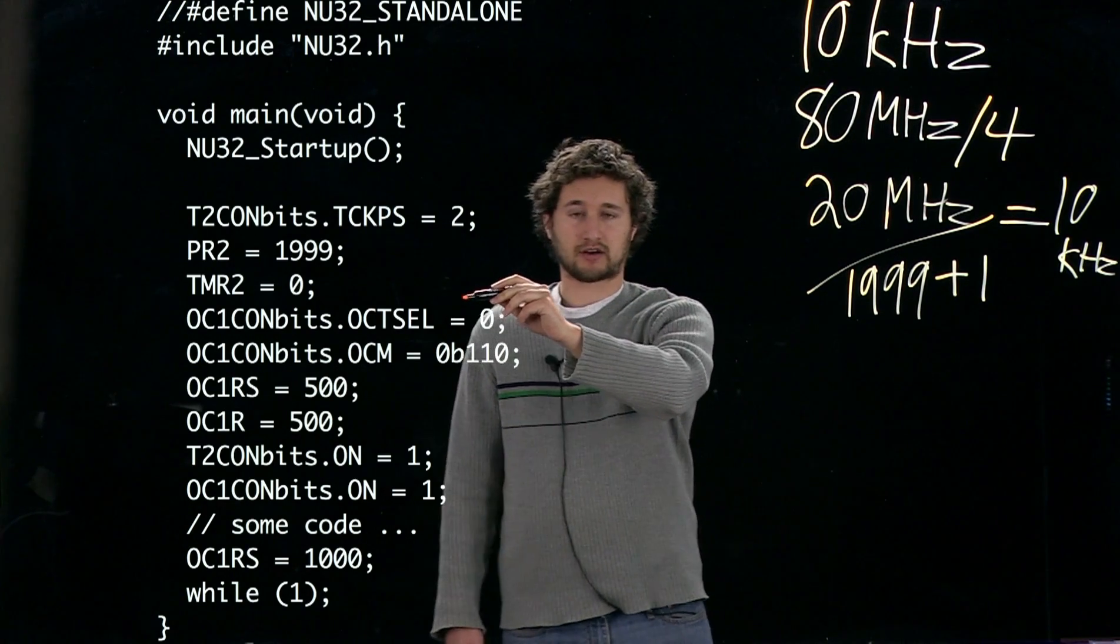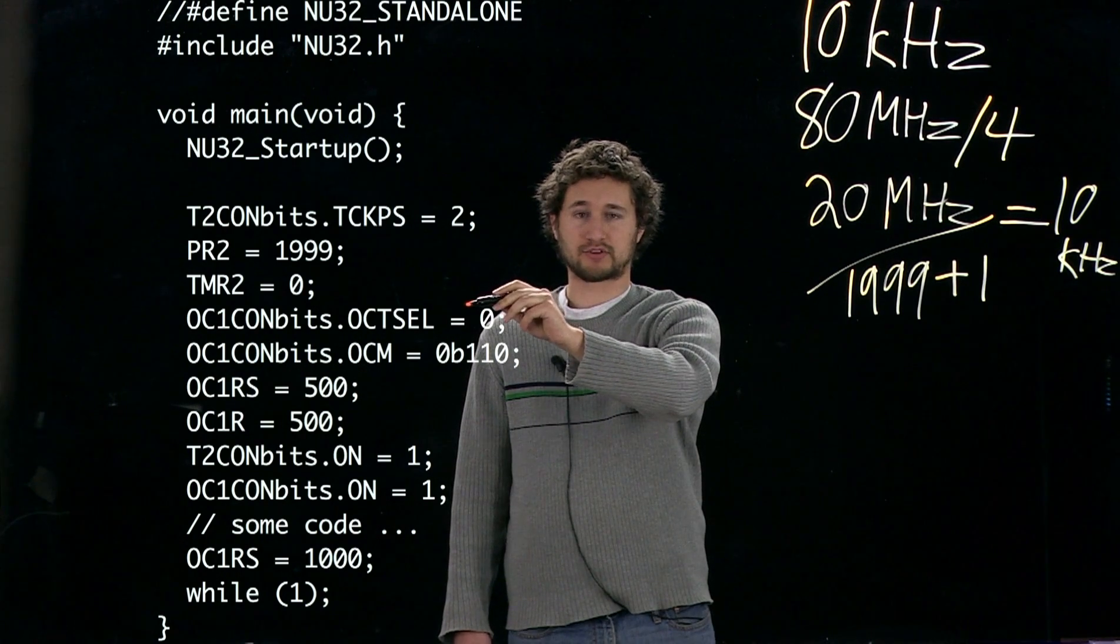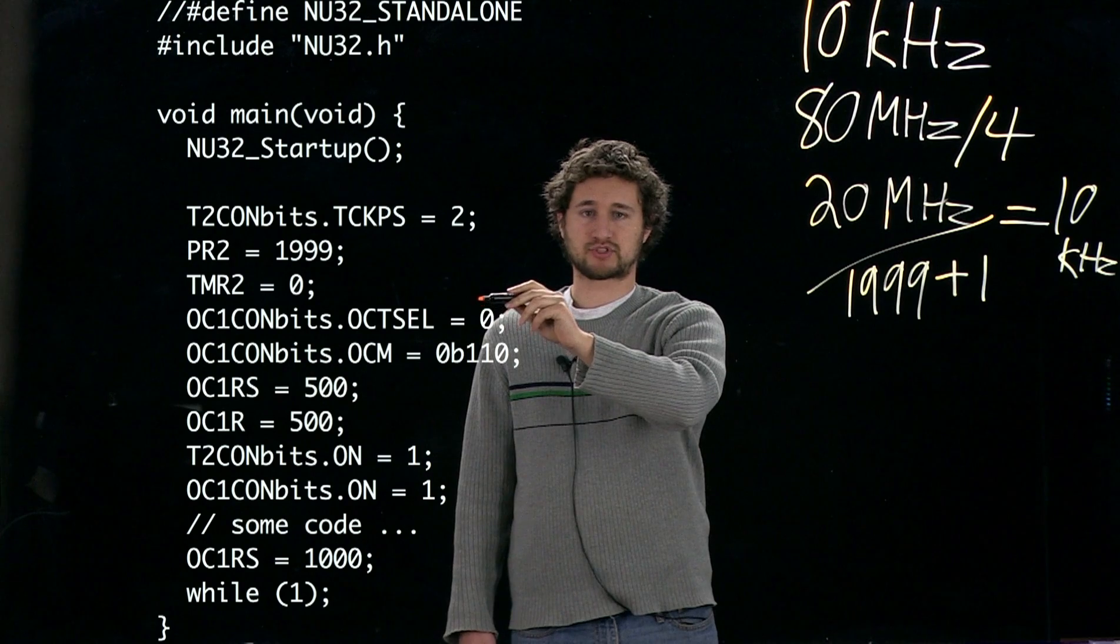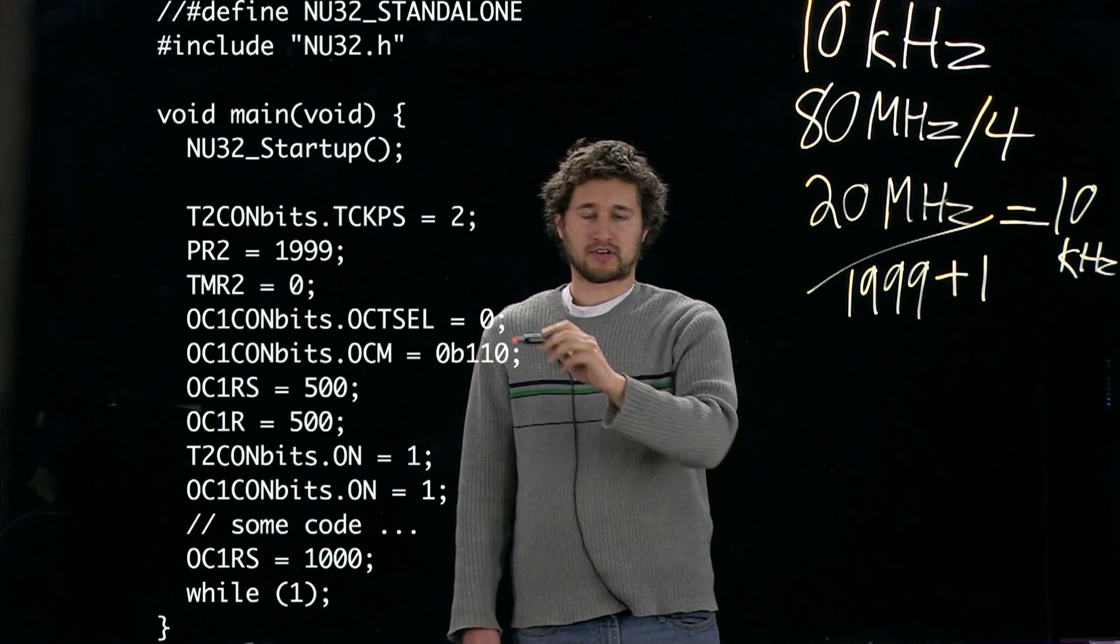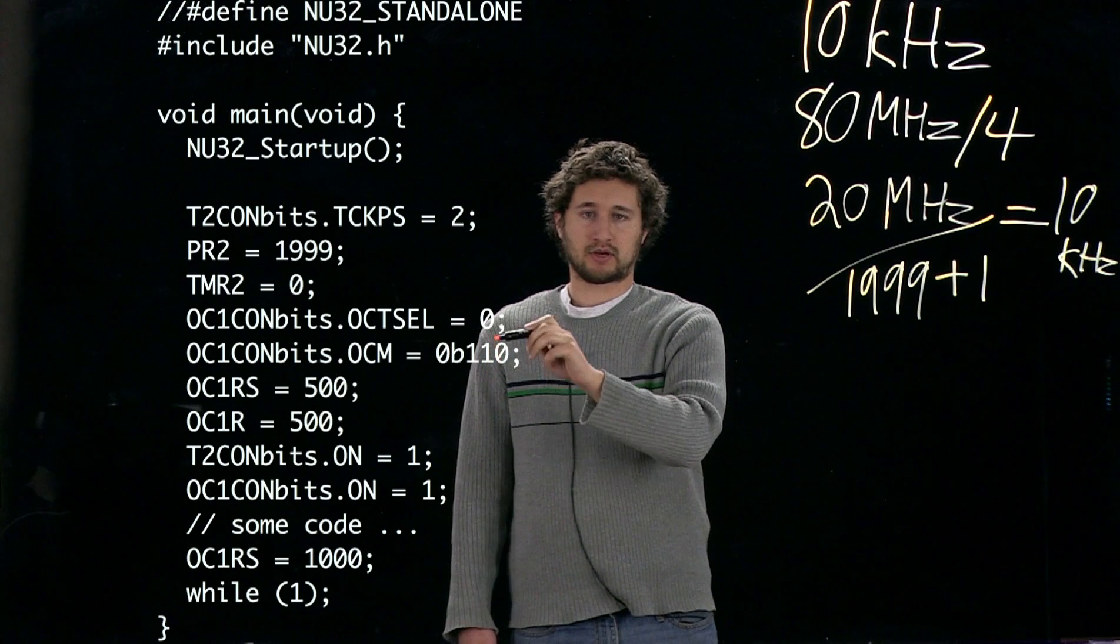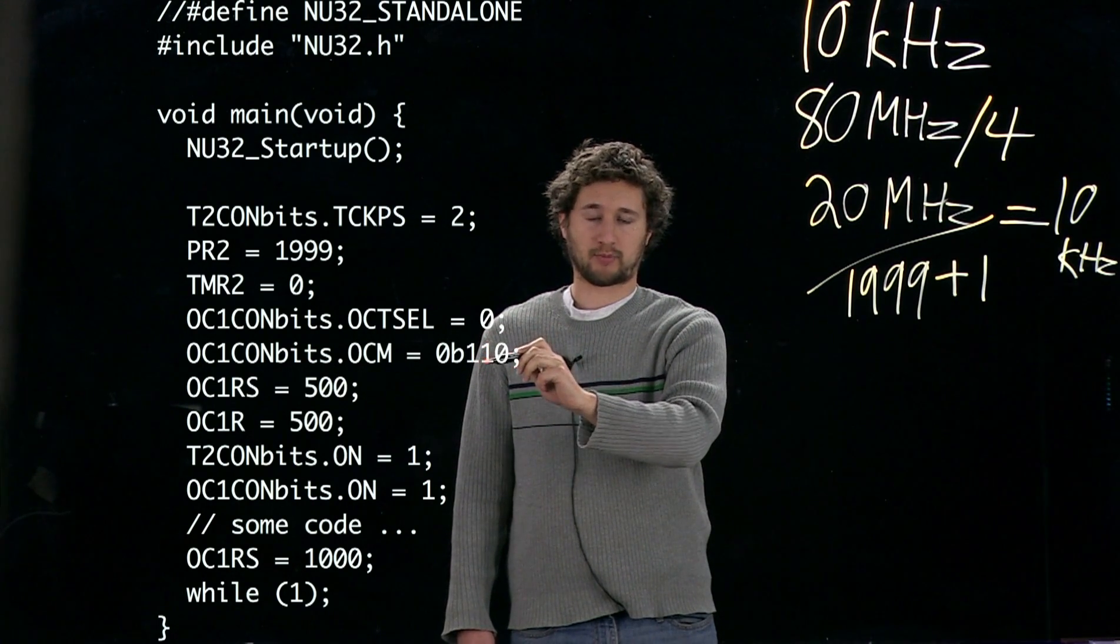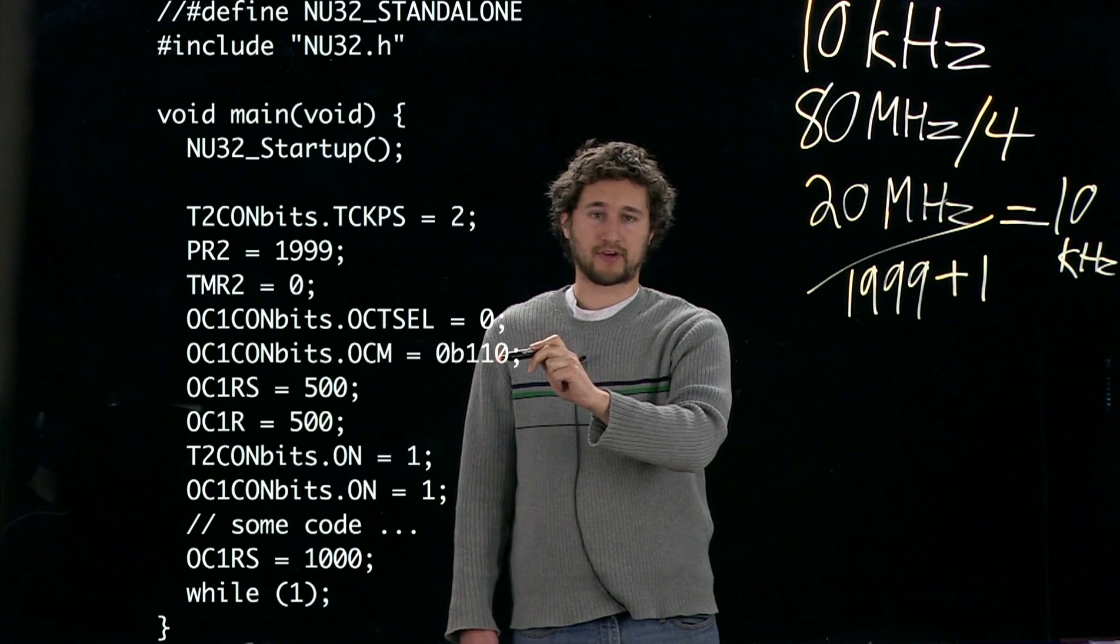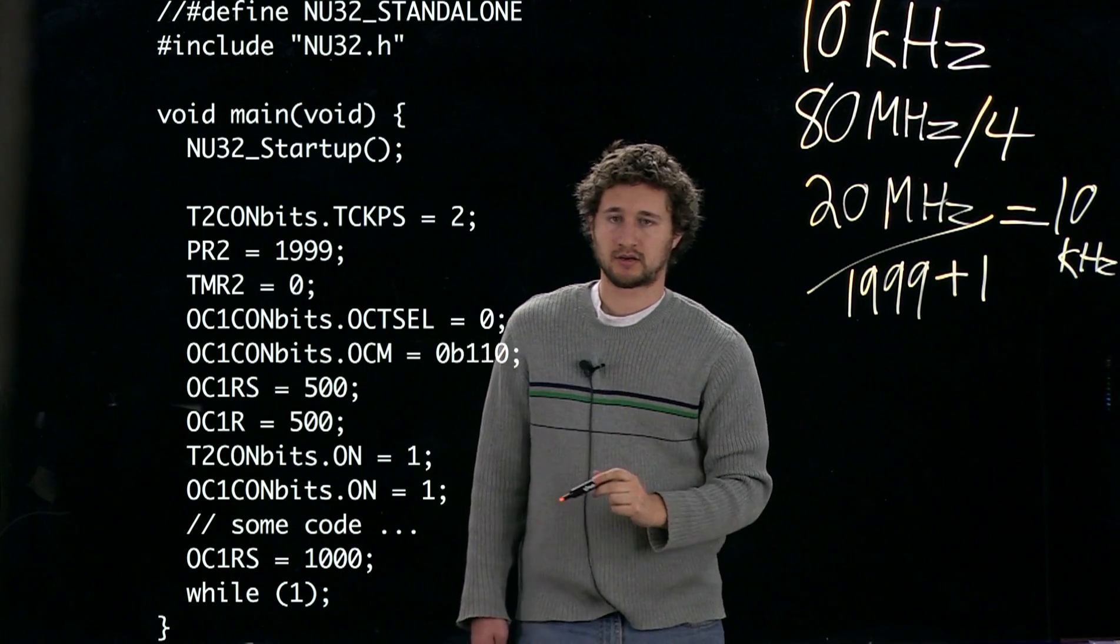Here where we set OC1ConBits.OCTSEL, this is telling output compare 1 to use timer 2. The next line OC1ConBits.OCM is setting up the output compare pin to use PWM without the failsafe method.